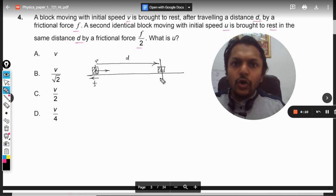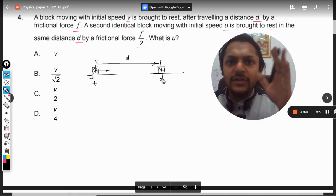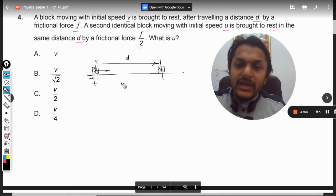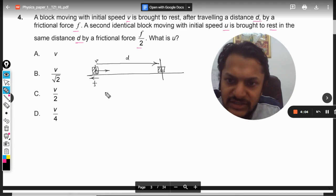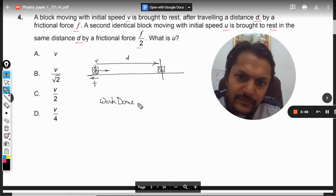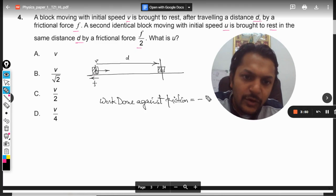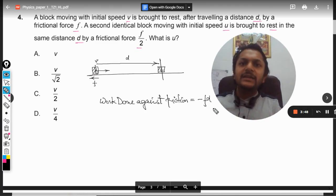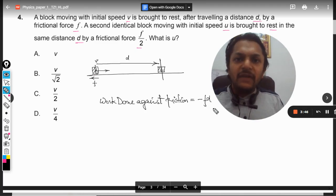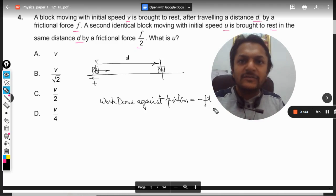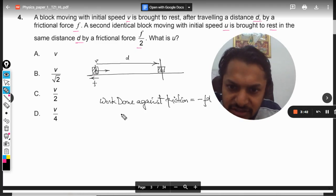So all of the kinetic energy is lost, but where is it lost? See, there has to be work done against friction because there is friction. Work done against friction—I can directly provide you with a formula that it is always equal to minus F into D, but I would be explaining why it is minus F into D.